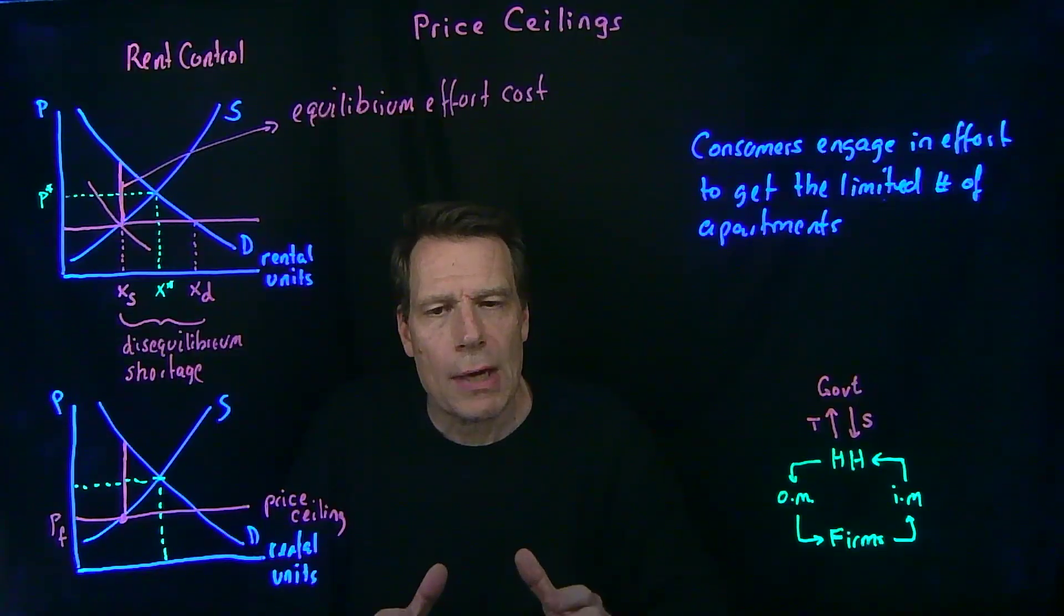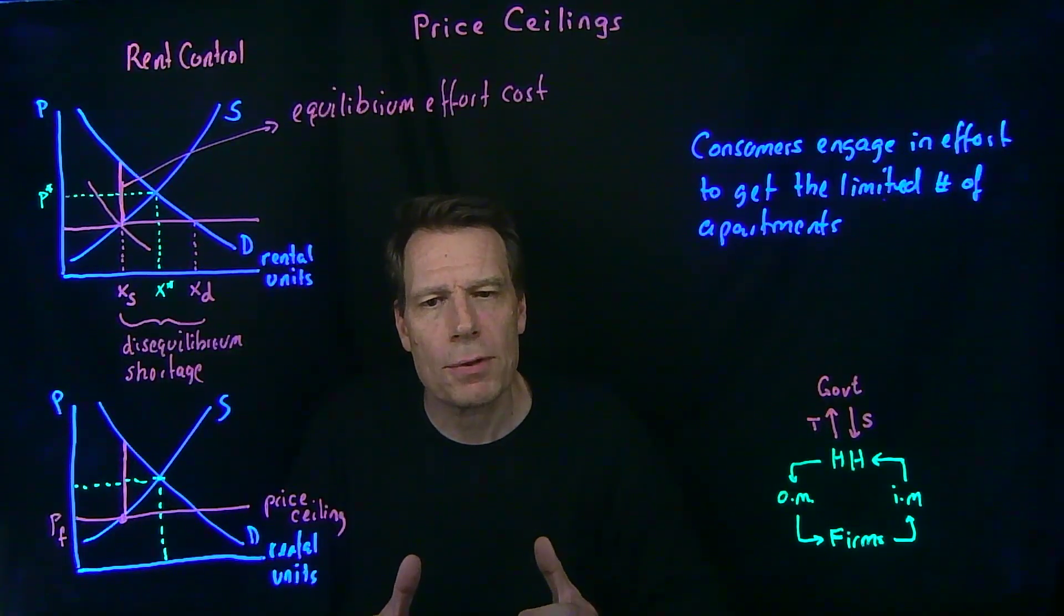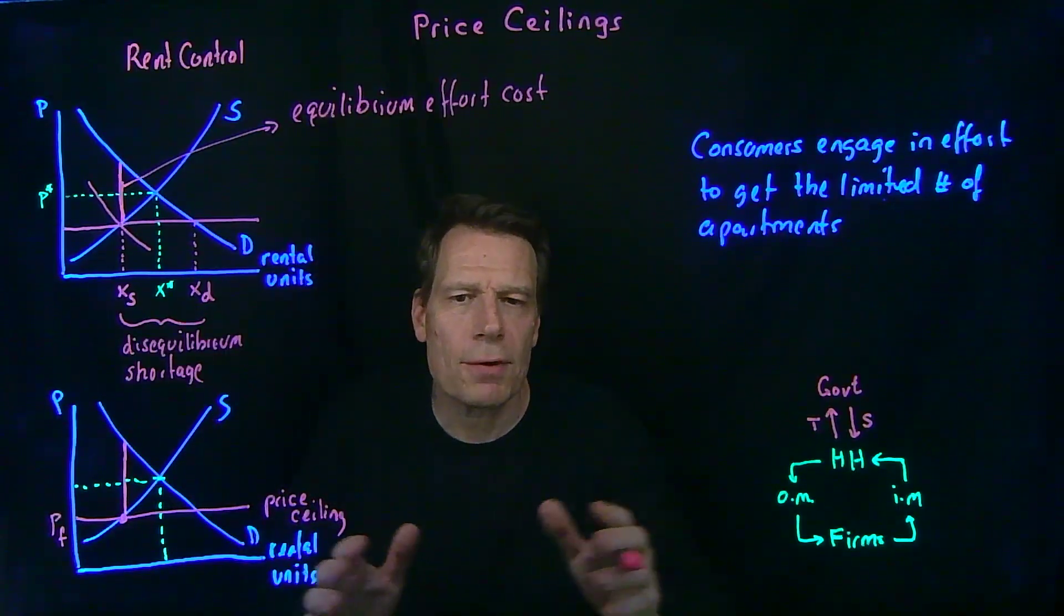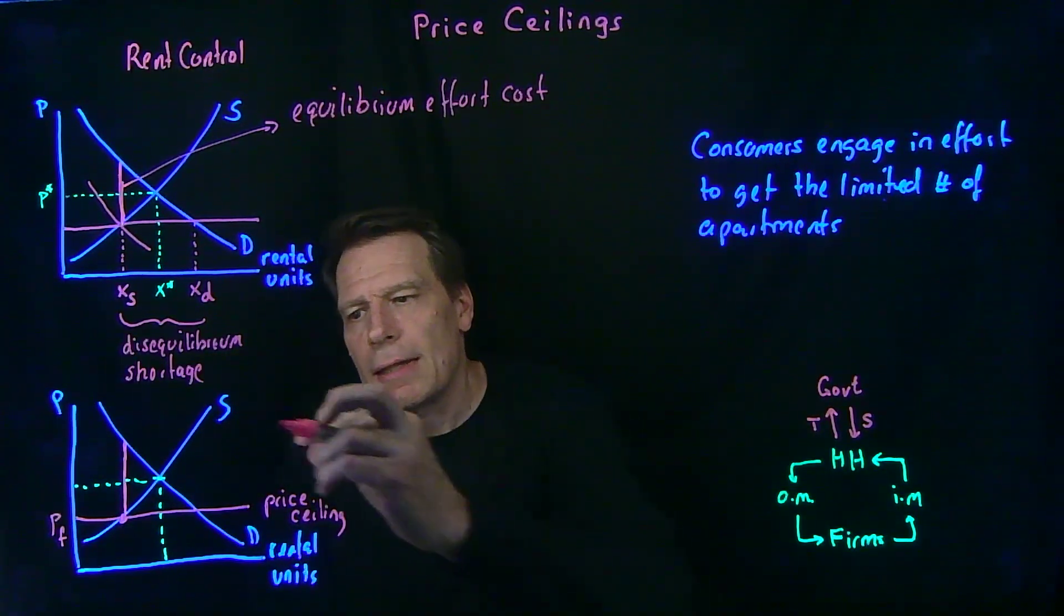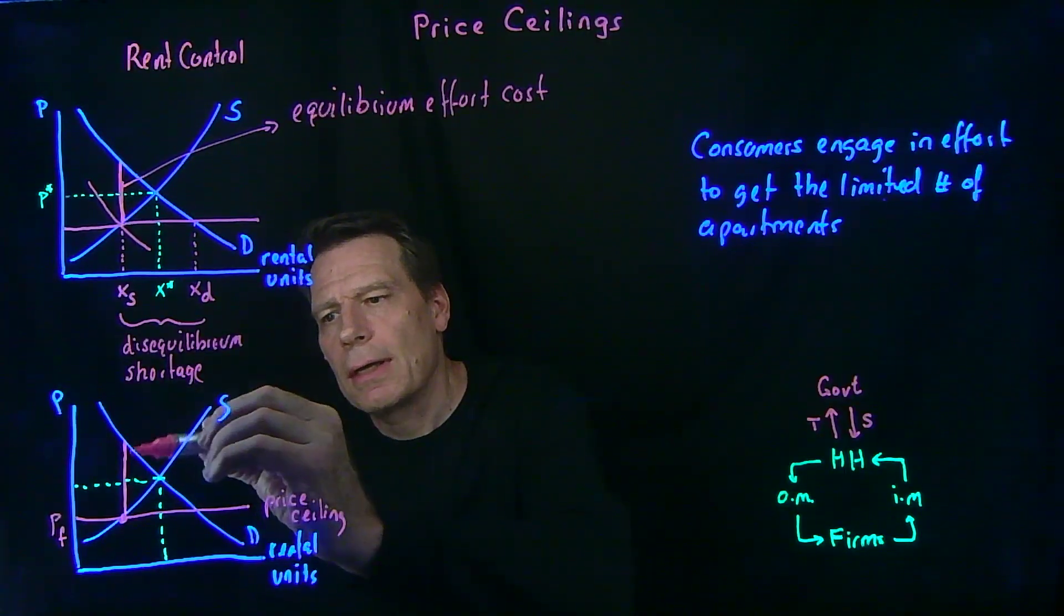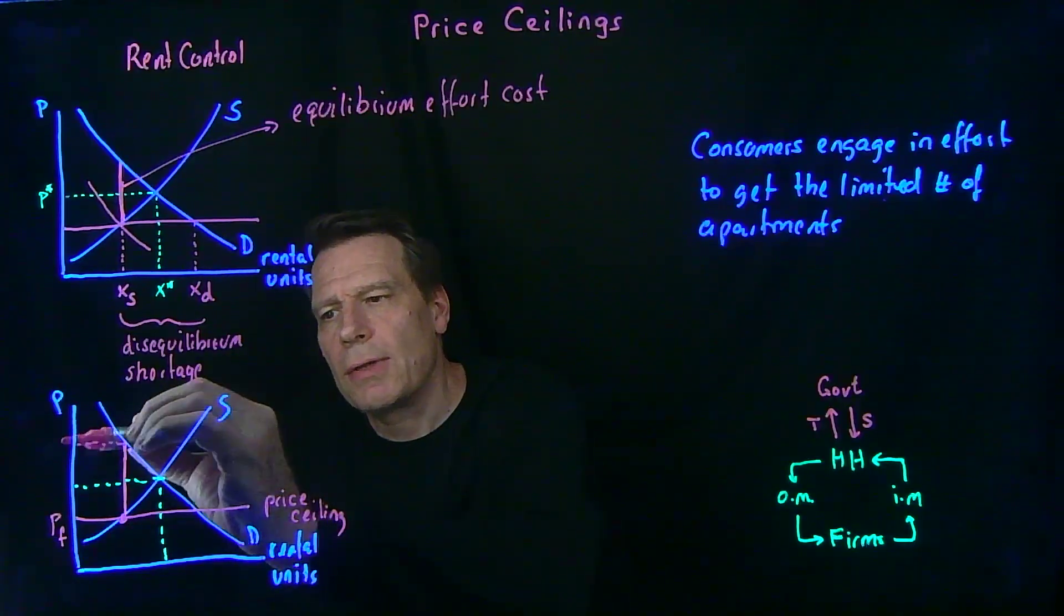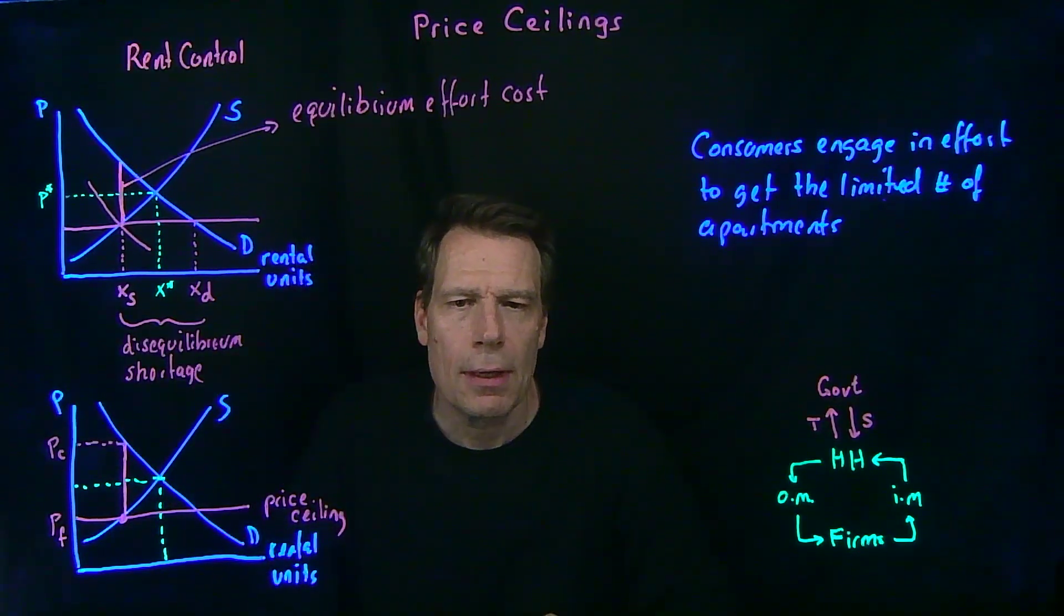But the consumers, or the households, are actually paying a higher price once you include the cost of the effort that they engage in to get into these limited numbers of rental units. How much additional do they pay? Well, if we spread that effort cost over the time that they actually occupy those apartments, that equilibrium effort cost is this vertical distance. So that actually becomes the price that consumers, or households, pay.